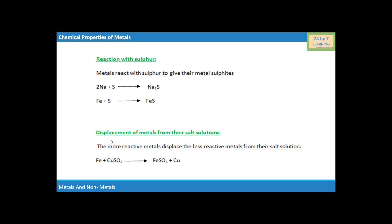Now we will see the displacement of metals from their salt solutions. The more reactive metals displace the less reactive metals from their salt solution. Iron, when it reacts with copper sulfate CuSO₄, will displace copper from its salt, and the reaction will yield FeSO₄, i.e. ferrous sulfate, while copper is displaced from its salt.